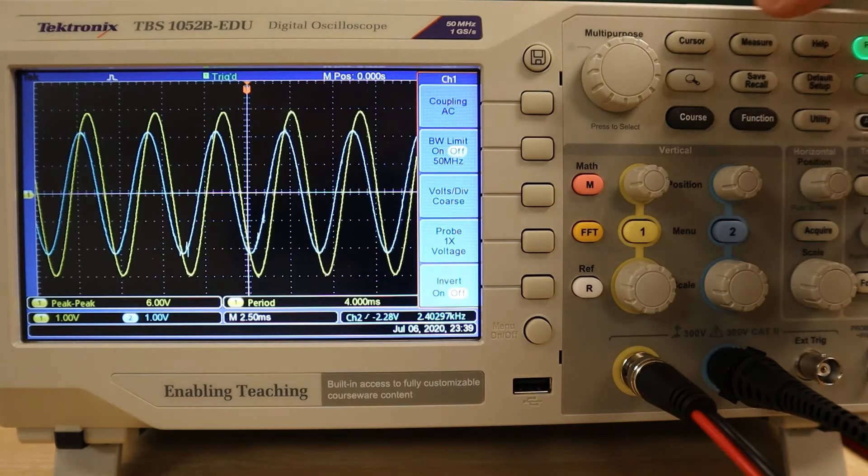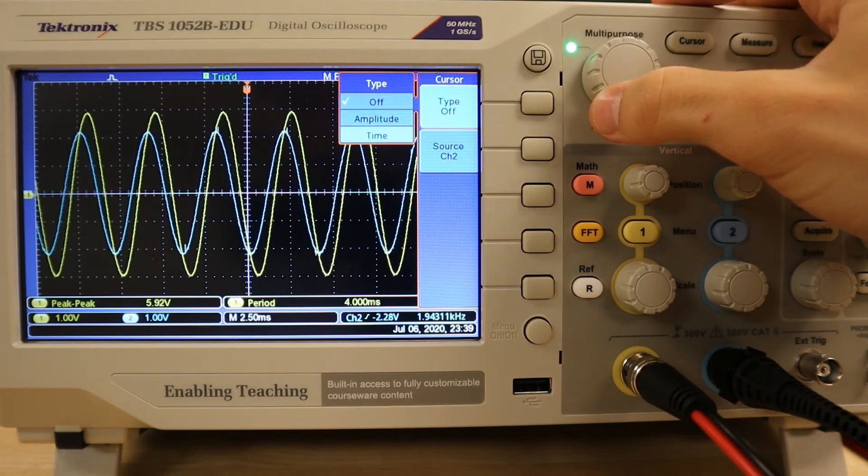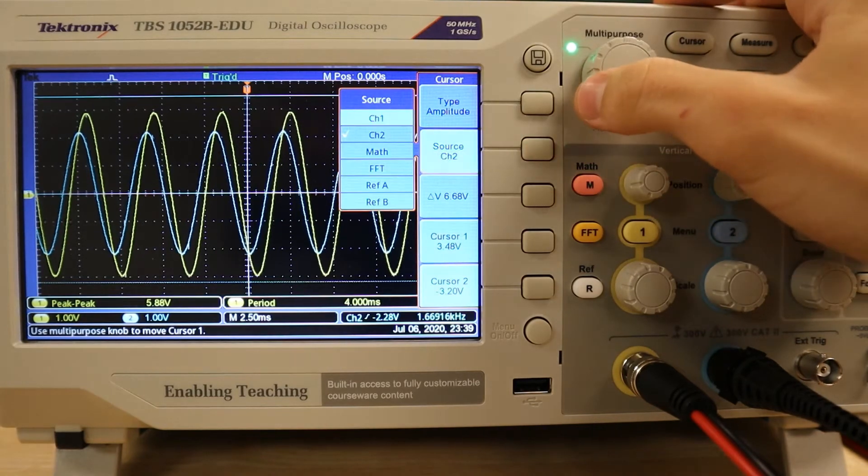To use the cursor, we'll select the proper button, which will allow us to change the cursor between measuring voltage or time. We also have a choice between measuring along the plot of channel 1 or 2.